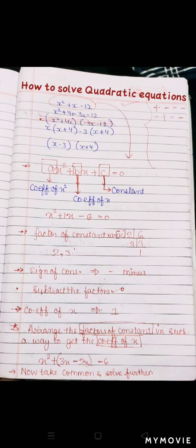Ab in factors ko humein kaise arrange karna hai. Pehle humein dekhna hai sign of constant — toh humare constant ka sign kya hai? Minus hai. Toh yani in factors ko hum subtract karenge. Dekhein: agar hum 2 aur 3 ko subtract karein toh humein kya milna chahiye? Humein milna chahiye x ka coefficient. Dekhein: idhar x ka coefficient 1 hai, aur 2 aur 3 ko subtract karke humein 1 mil jayega. So this arrangement is correct.